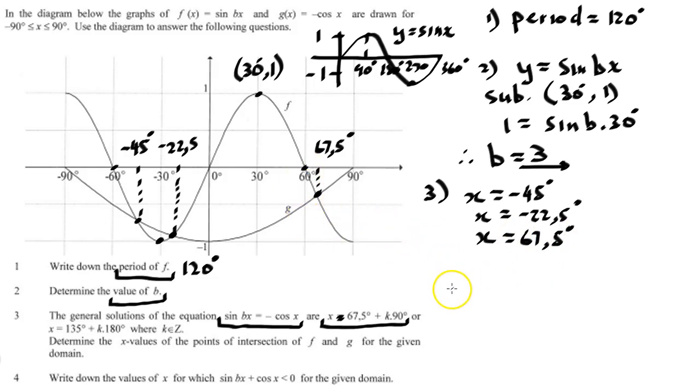Let's look at question 4. It reads, write down the values of x for which sin bx + cos x is less than 0 for the given domain. Note, our domain is between -90 and 90. So let's write down sin bx + cos x < 0. What are they saying? They're saying sin bx must be less than, if we move cos x to the other side, it's -cos x. So if we just put their names now, it will be where is f(x) less than g(x).